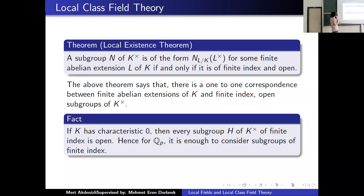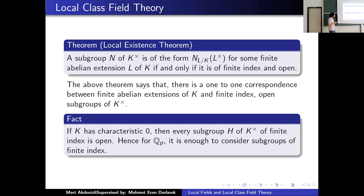Another important theorem is the local existence theorem. It says that a subgroup of K* is a norm subgroup for some finite abelian extension L of K if and only if it is an open subgroup of finite index. This gives a one-to-one correspondence between finite abelian extensions of K and finite index open subgroups of K*. So to understand the abelian extensions of K, you need to find the finite index open subgroups of K*. As a fact, if K has characteristic zero, then every subgroup of K* of finite index is open, so for Q_p it is enough to consider subgroups of finite index.